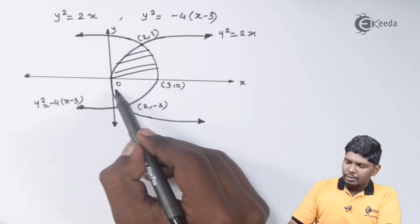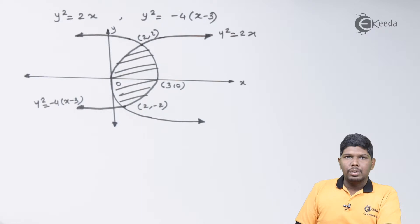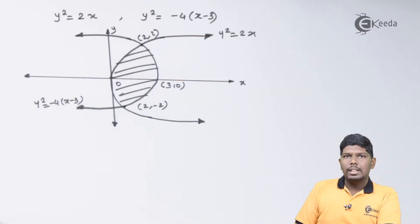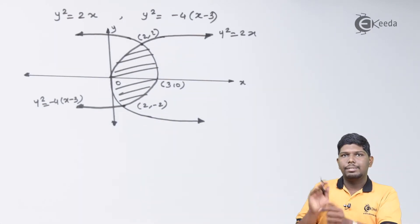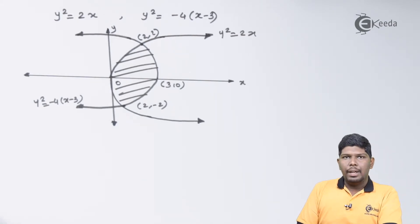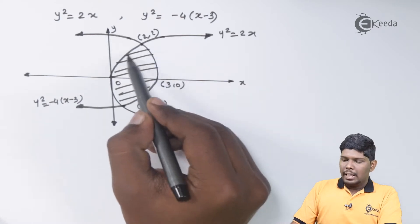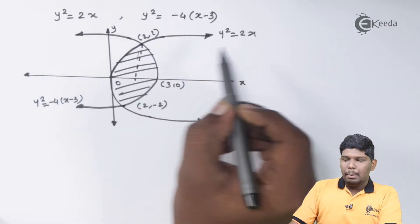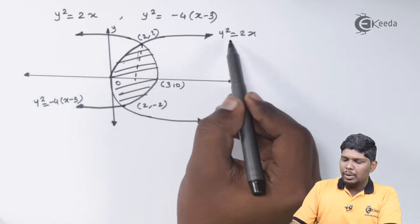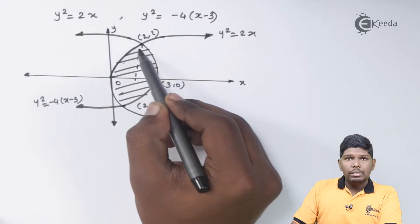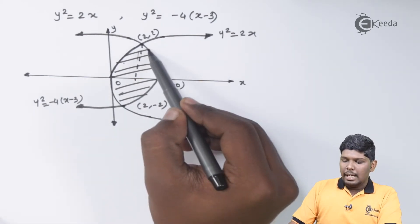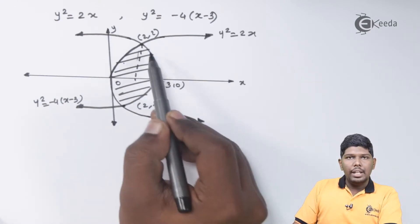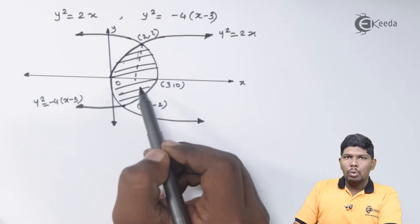The enclosed area lies between the two curves. To find this area, we can first find the upper region and then multiply by 2, since the upper and lower areas are symmetric. The upper area can be split at x equals 2: the region from x equals 0 to x equals 2 is contributed by the first parabola, and the remaining region from x equals 2 to x equals 3 is contributed by the second parabola. We add these two areas and then multiply by 2 for the final answer.